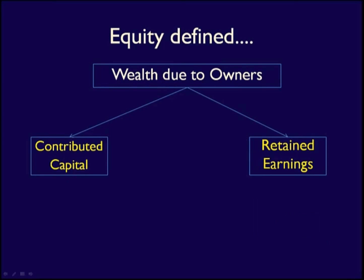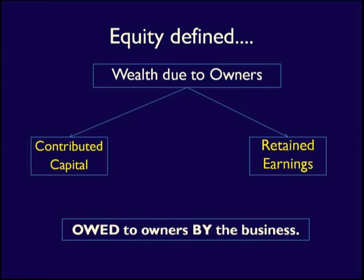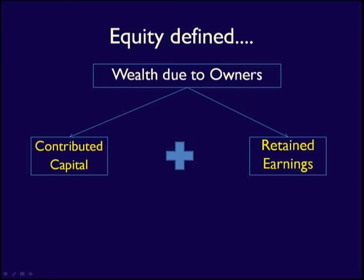So, to summarize, equity is the capital invested by the owners plus the net income less dividends retained by the business. Equity is owed to the owners of the business by the business — capital plus retained earnings owed to the owners.